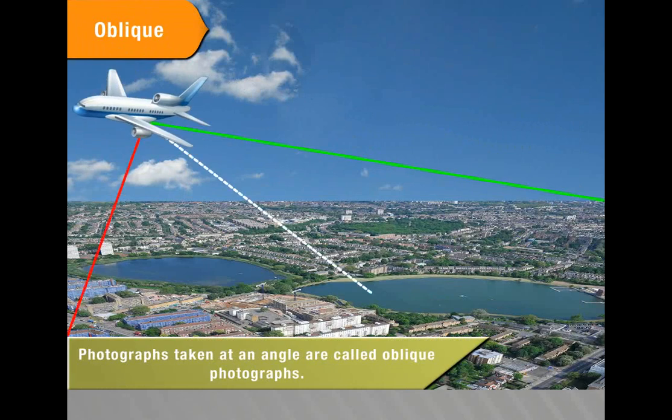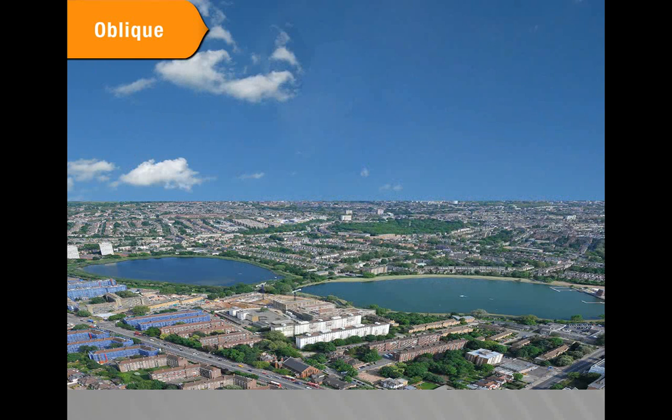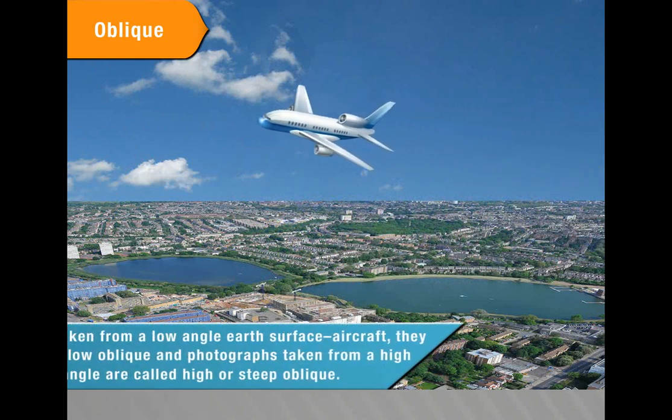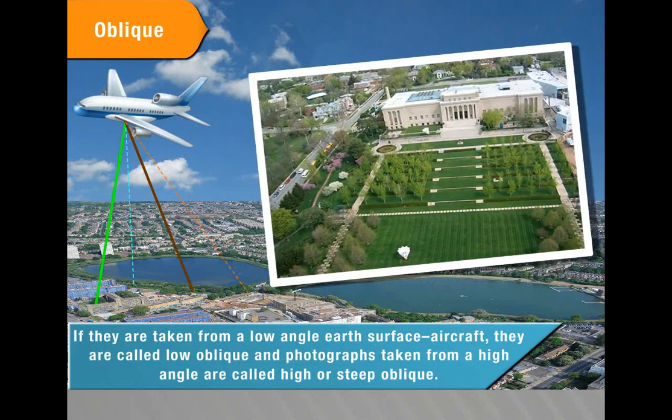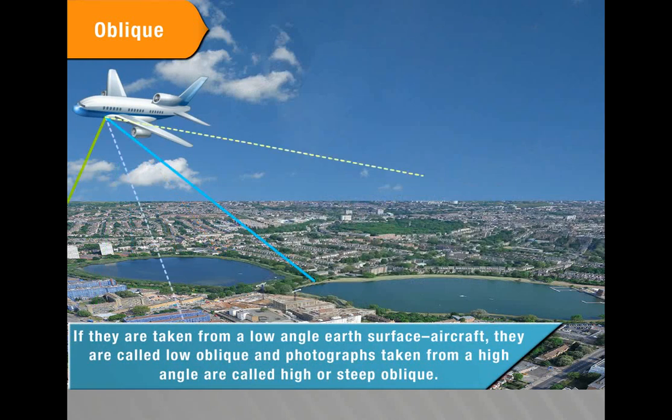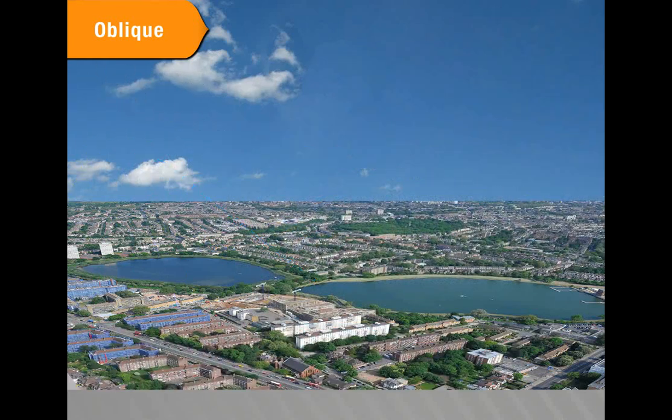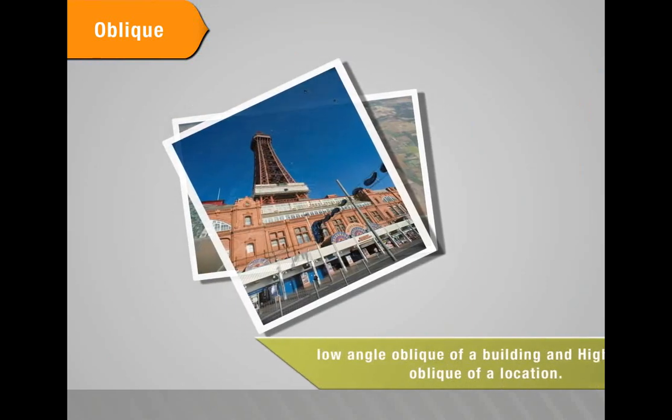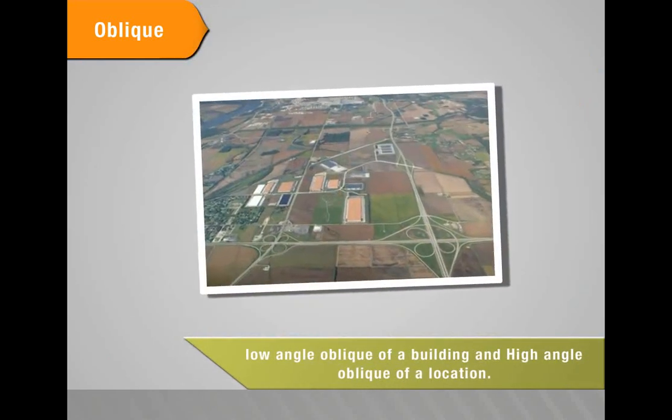Photographs taken at an angle are called oblique photographs. If taken from a low-angle earth-surface aircraft, they are called low oblique, and photographs taken from high-angle are called high or steep oblique. Low-angle oblique of a building and high-angle oblique of a location.